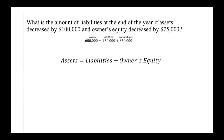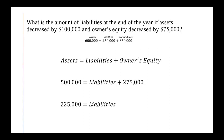Part B is totally independent from part A, so we go back to our original asset, liability, and owner's equity amounts for the beginning of the year. Part B asks: what is the amount of liabilities at the end of the year if assets decreased by $100,000 and owner's equity decreased by $75,000? Assets decreasing by $100,000 gets us $500,000. Owner's equity decreased by $75,000, so we take $350,000 minus $75,000 to get $275,000. We subtract $275,000 from each side and find that liabilities equal $225,000 at the end of the year.